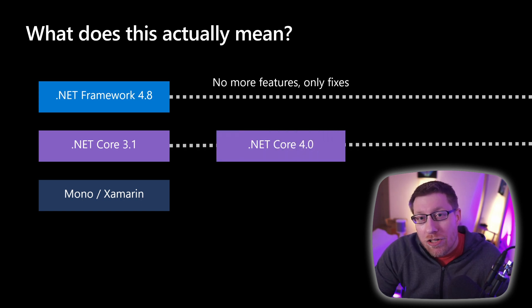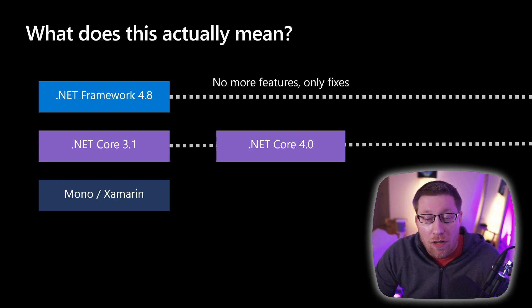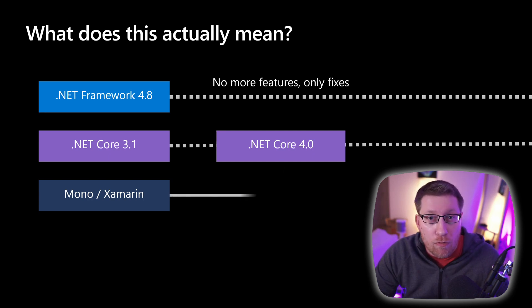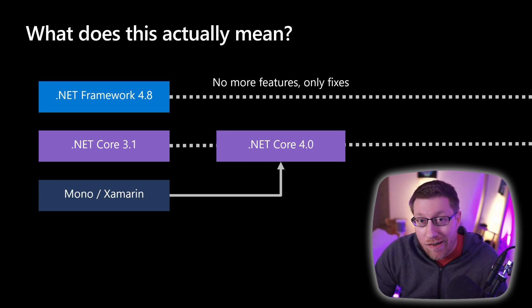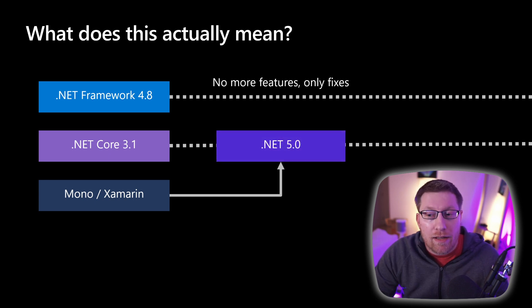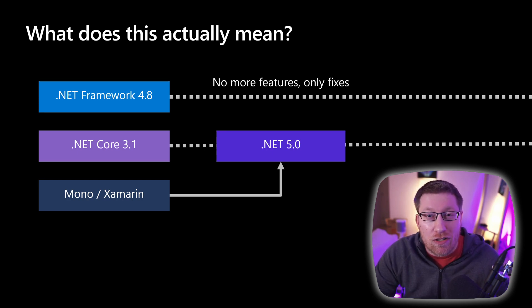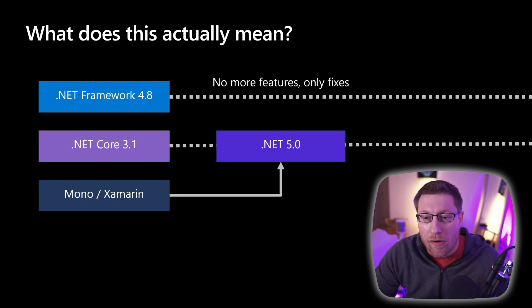For .NET Core, logically, if you shipped a new version you'd call it .NET Core 4, since we're currently on .NET Core 3.1. We also had the plan to take the Mono/Xamarin parts and merge them with .NET Core. When we looked at this picture, we said: since .NET Framework is not creating a new version anymore, maybe it makes sense to simplify the branding and just call it .NET. And since 4.8 is the current version of .NET Framework, let's avoid confusion and jump straight to 5, to make it clear that this is the successor of .NET Framework.